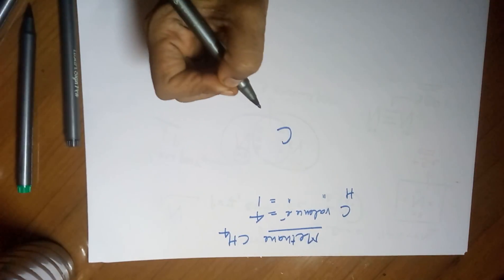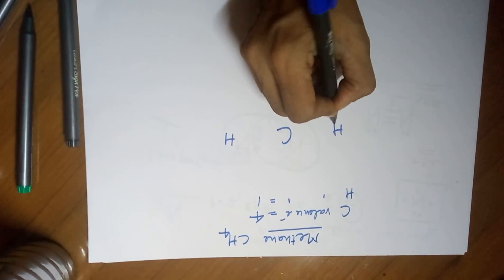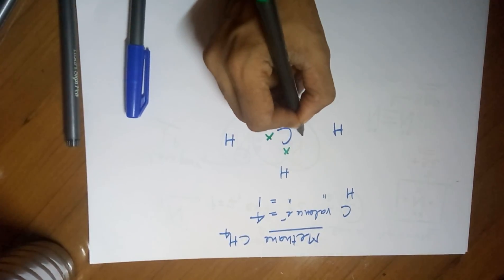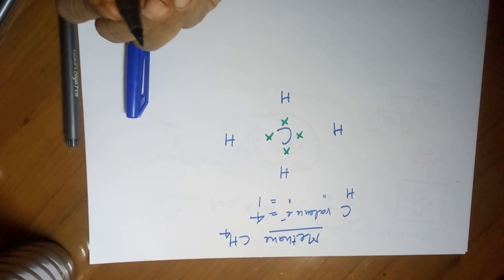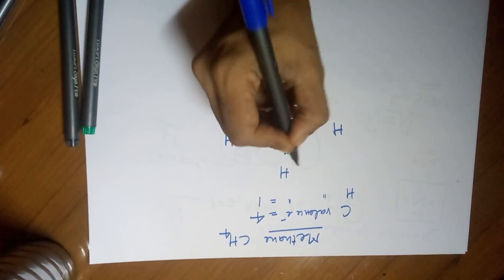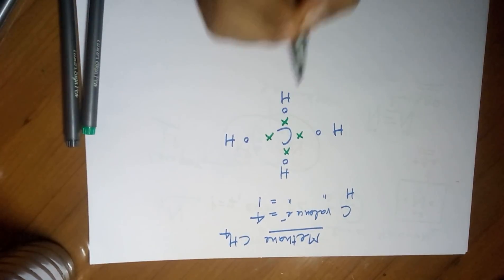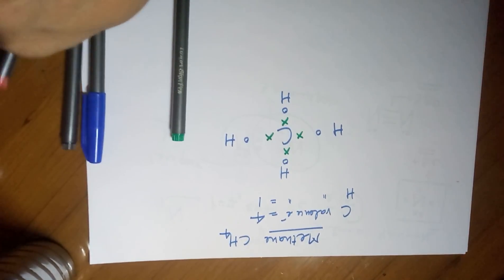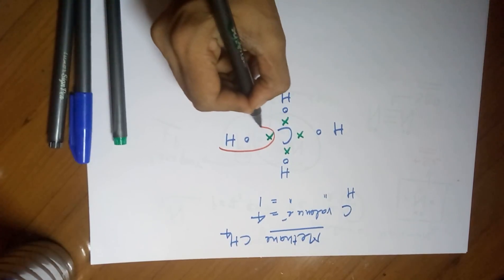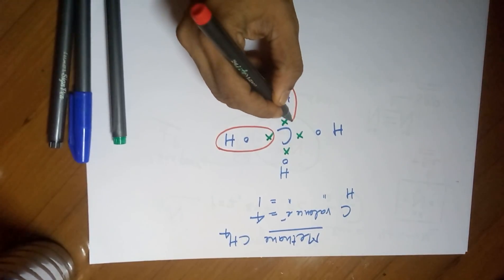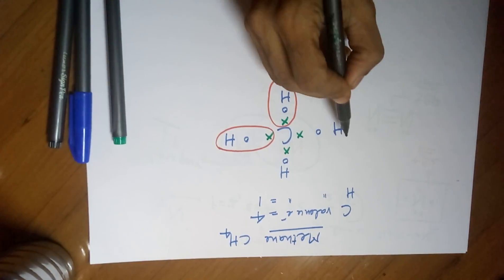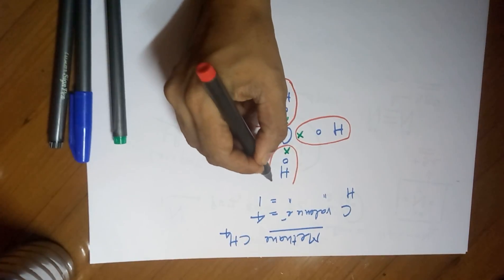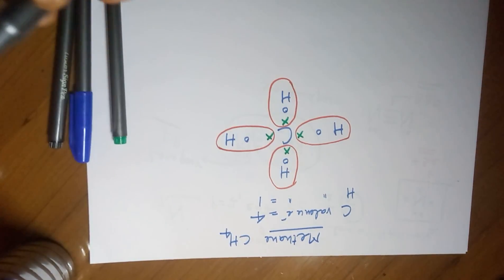Therefore, write carbon in the center and the 4 hydrogens around it. Carbon has 4 electrons in its outermost shell — that's how it is written. Each hydrogen has just 1 electron. The blue dot refers to the valence electron of hydrogen and the green cross refers to the valence electron of carbon. This hydrogen needs 1 — satisfied. This hydrogen shares 1 electron with carbon. This hydrogen also shares 1 electron with carbon.